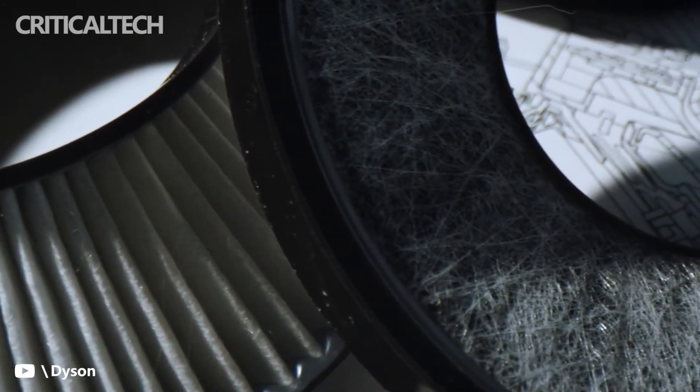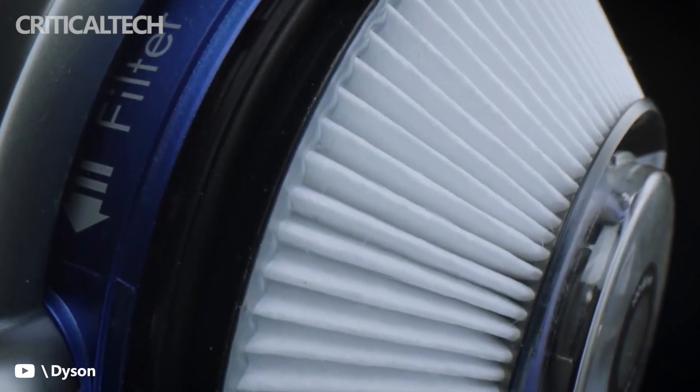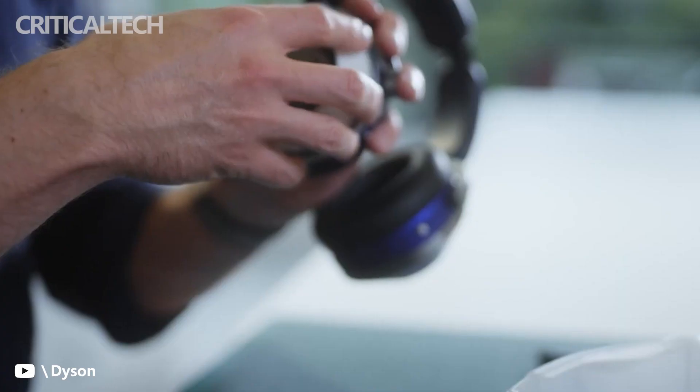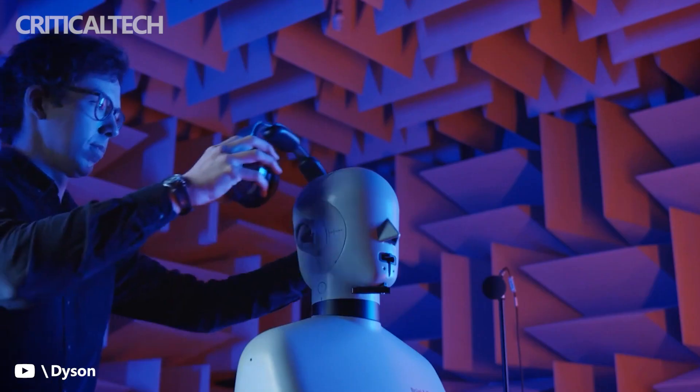The Dyson Zone can adjust itself to deliver the right amount of air, whether you're sitting at your desk or exercising. Also, it is designed to block wind from blowing uncleaned air towards your nose and mouth.